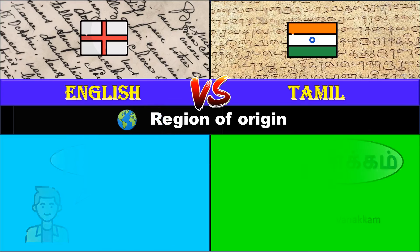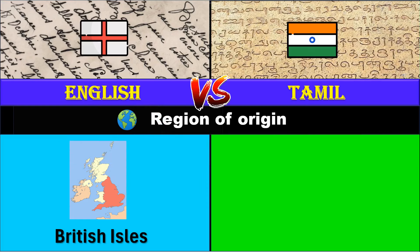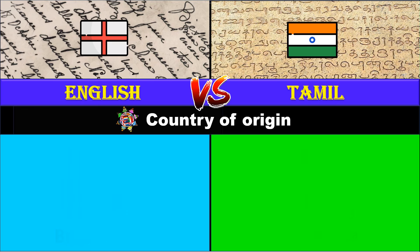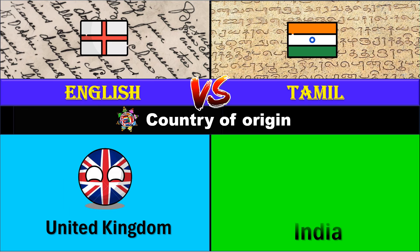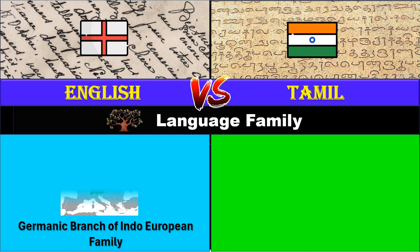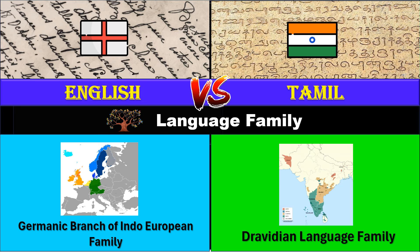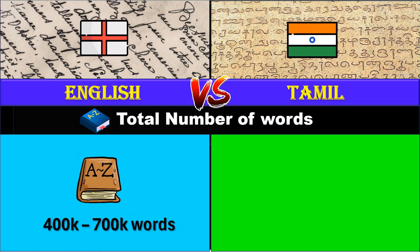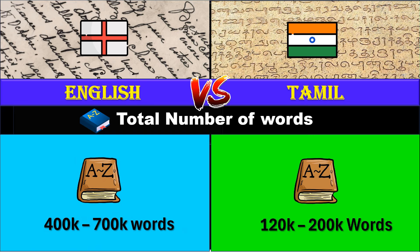Region of origin: British Isles for English, Southern India for Tamil. Country of origin by modern boundaries: United Kingdom and India. Language family: Germanic branch of the Indo-European language family versus the Dravidian language family. Total number of words: 400,000 to 700,000 for English, and 120,000 to 200,000 words for Tamil.